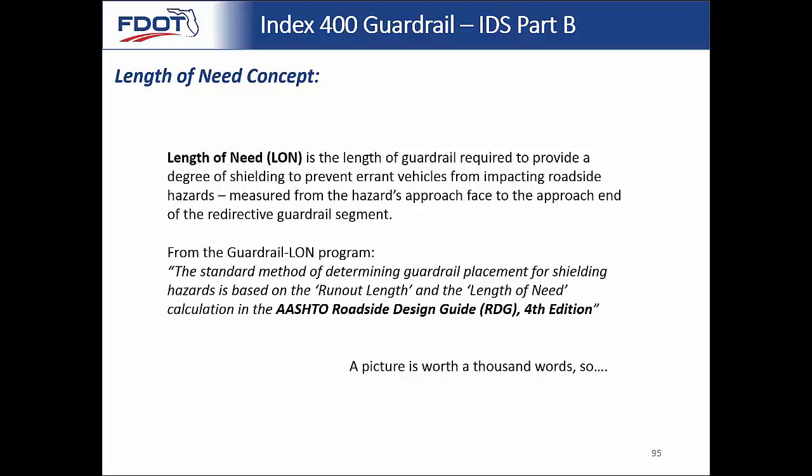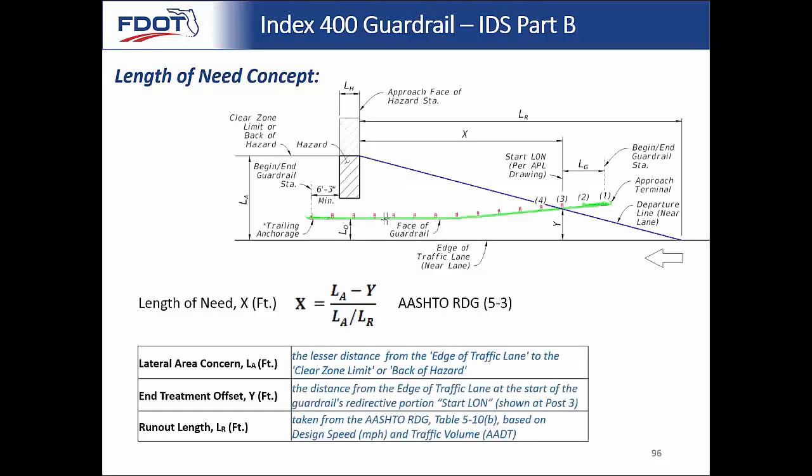Length of need, otherwise known as LON, is the length of guardrail required to provide a degree of shielding to prevent errant vehicles from impacting roadside hazards. It's measured from the hazard's approach face to the approach end of the redirective guardrail segment. The standard method of determining guardrail placement for shielding hazards is based on the runout length and the length of need calculation in the AASHTO Roadside Design Guide 4th Edition.